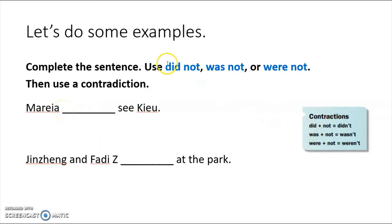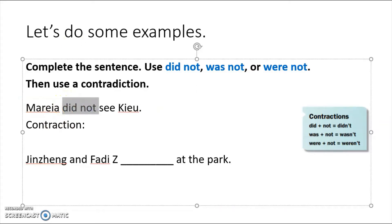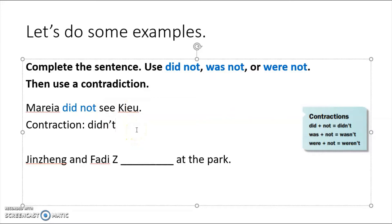First example — Maria blank see you. Think about it: it's 'did not see you,' so we write 'did not.' Now for the contraction — 'did not' becomes 'didn't.' Maria didn't see you. Instead of 'did not,' we put 'didn't.'